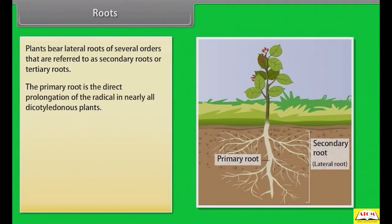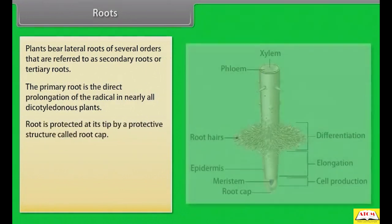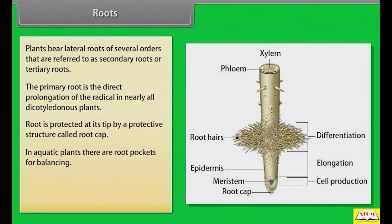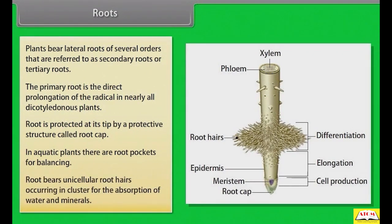The primary root is the direct prolongation of the radicle in nearly all dicotyledonous plants. Root is protected at its tip by a protective structure called the root cap. In aquatic plants there are root pockets for balancing. Root bears unicellular root hairs occurring in clusters for the absorption of water and minerals.